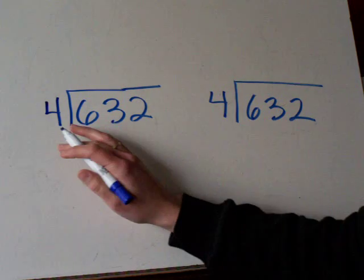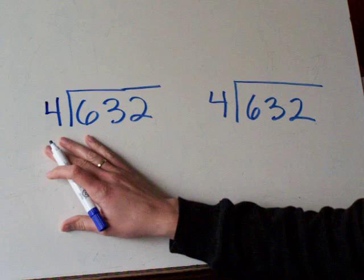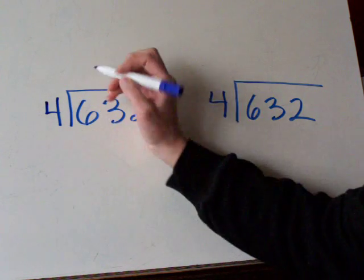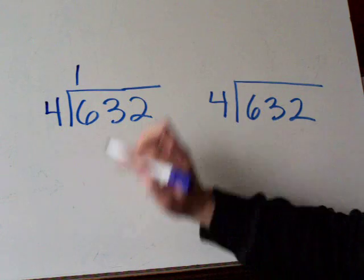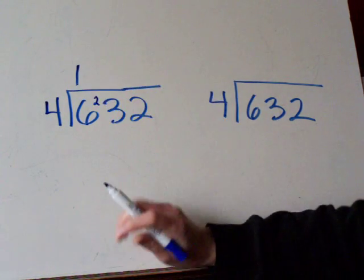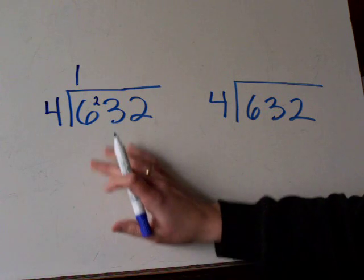In short division you do the same type of thing. We have the number 632 divided by 4. You think 4 goes into 6 how many times? It goes in there once. It goes in there once with a remainder of 2. We're going to put that remainder here in front of the next digit in the number.